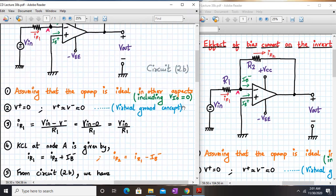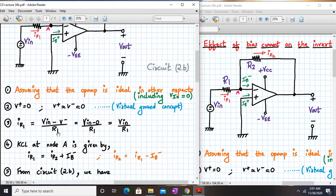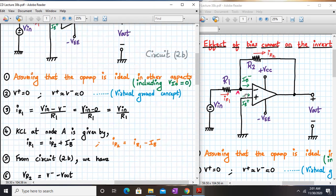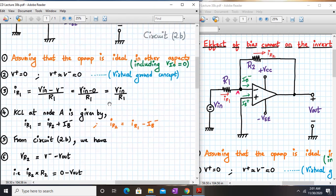We say that V plus is zero, so V plus is approximately equal to V minus equal to zero, which is your virtual ground concept. Now if you look carefully from the circuit, IR1 will be given by Vin minus V minus upon R1, and V minus is zero, so IR1 will be Vin upon R1. Now we apply KCL at node A, which gives us IR1 is equal to IR2 plus Ib minus. So IR2 will be IR1 minus Ib minus.